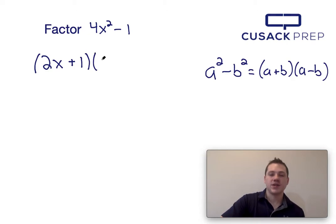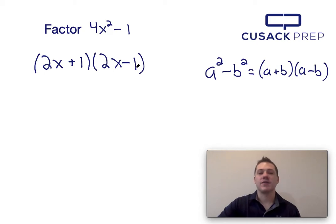So we simply write 2x plus 1 times 2x minus 1. And there you have it, that's how you factor 4x squared minus 1 using the difference of squares.